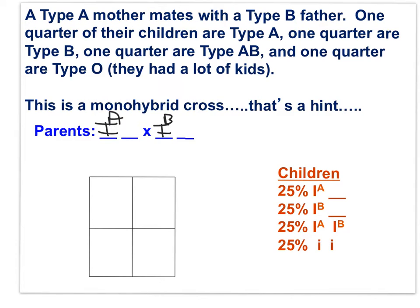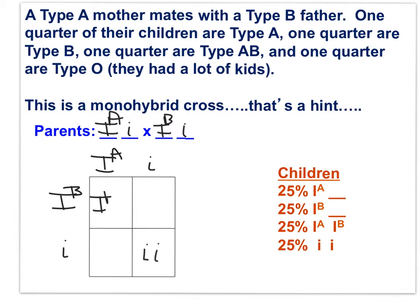Immediately we know that if they have type O children, both parents must be heterozygous and each carry the O allele. This is also a monohybrid cross, so both parents are heterozygous. Filling in the Punnett square with the mother's and father's gametes, we get AB children, B children, A children, and O children in equal proportions.